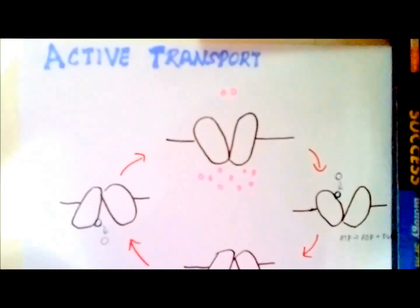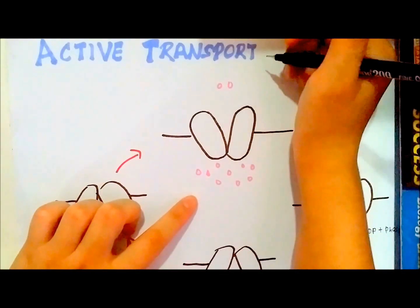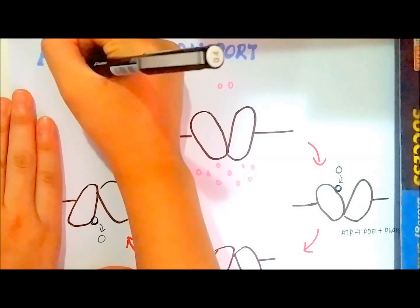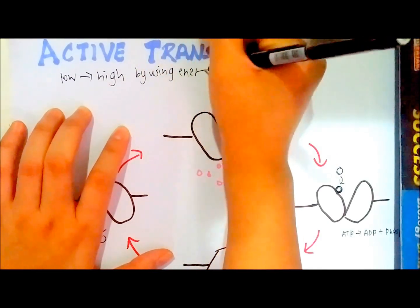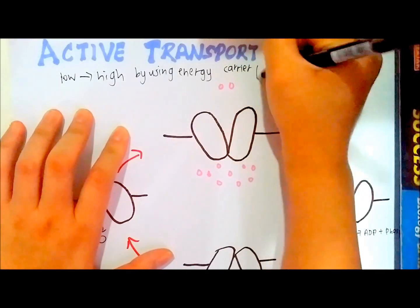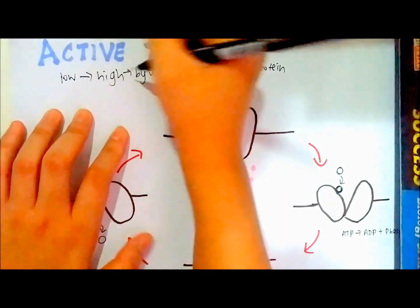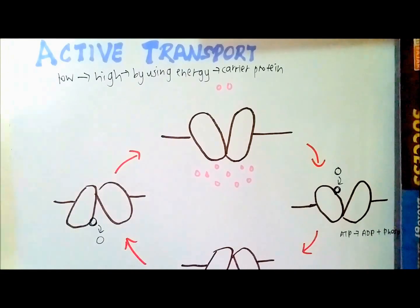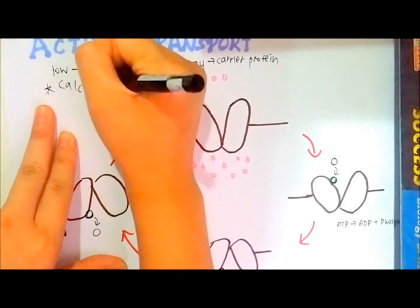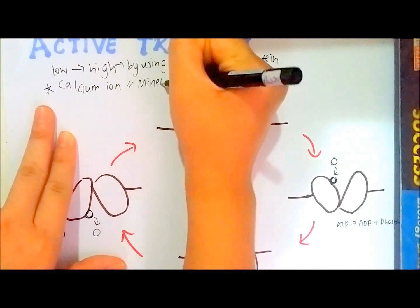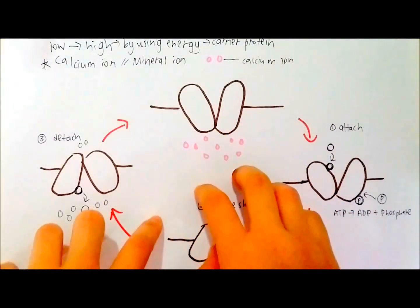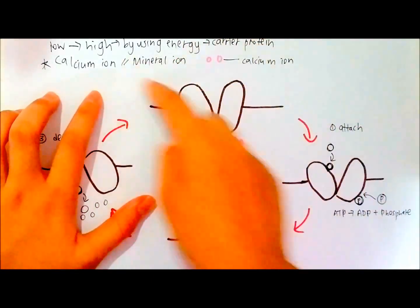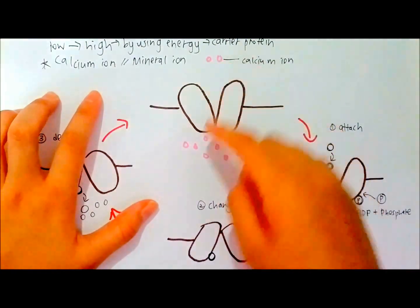Now let's talk about active transport. Active transport means transport of molecules against its concentration gradient — from a region of low concentration to a region of high concentration, using energy with the help of carrier proteins. The molecules that use active transport include calcium ions or mineral ions. Since active transport moves ions from low to high concentration, the region outside the cell has fewer calcium ions compared to inside the cell.